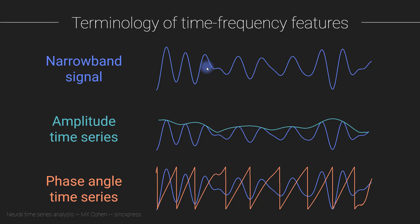For a time domain signal, or an amplitude time series or power time series, if you want to know how consistent the time series is over different trials and different stimulus repetitions, all you do is average them together — just like when you create an ERP. Just simple averaging at every time point. Likewise, to see if the amplitude or power time series is consistent over different trials, you are also just averaging. You have to do some feature extraction first via wavelet convolution, but once you've extracted the time series, you are still just doing a simple average over different trials.